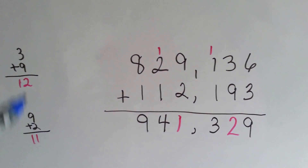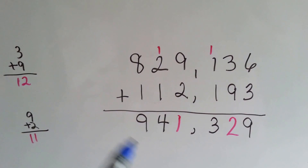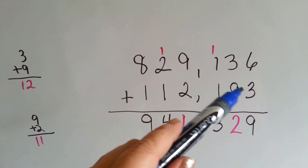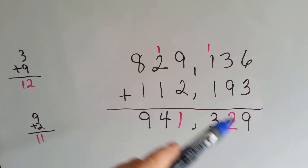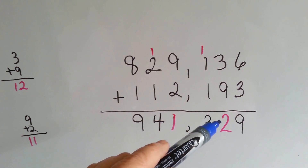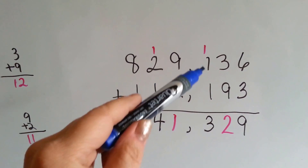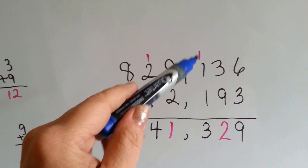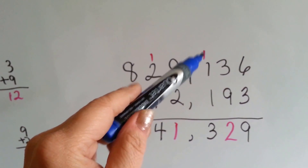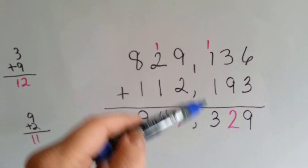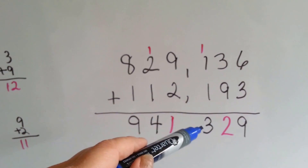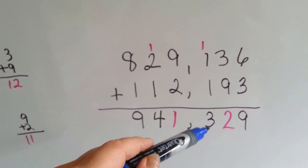We've got our math on the side when we added the larger numbers. 6 plus 3 is 9, and 3 plus 9 is 12. We put the 1 up here and carry it over to the next column, and put the 2 down here. 1 plus 1 plus 1 is 3. We put that down here.